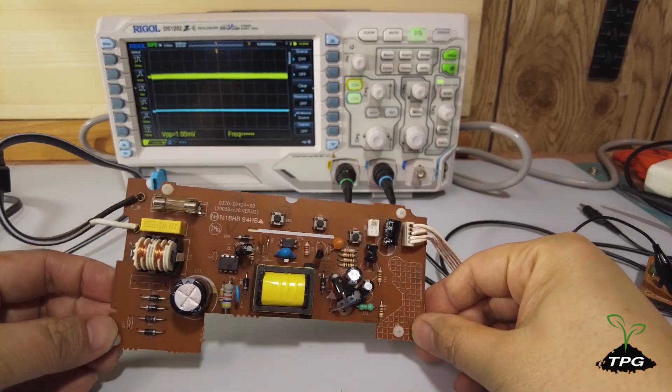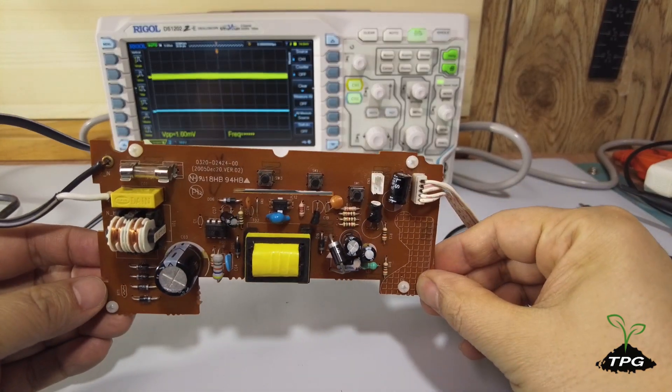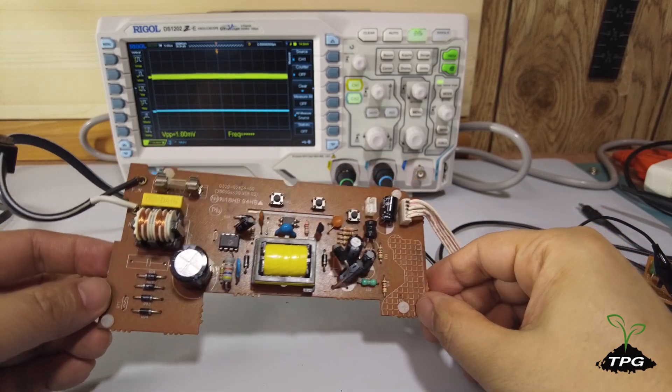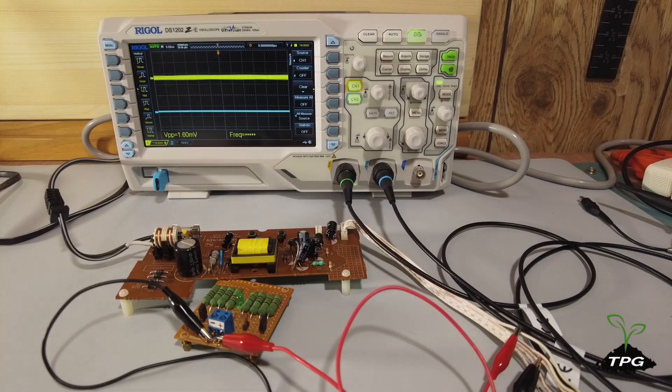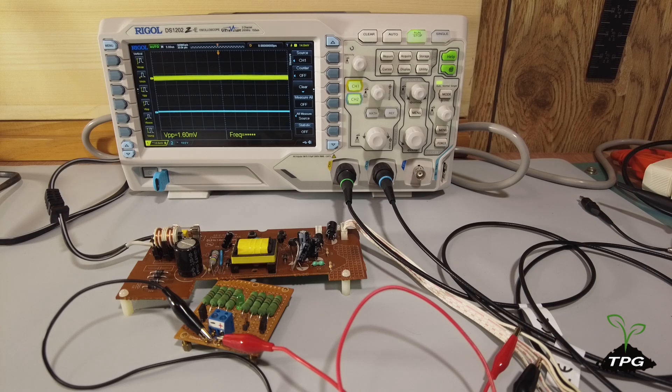The ripple voltage is a crucial parameter to consider in switched mode power supply operation. This SMPS operates in flyback mode and will be used to demonstrate how to measure ripple voltage using an oscilloscope.